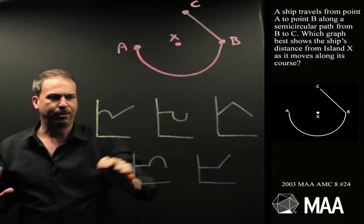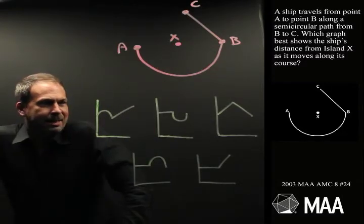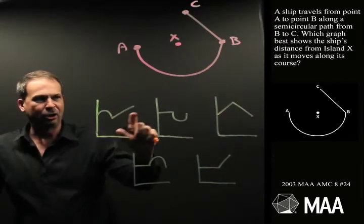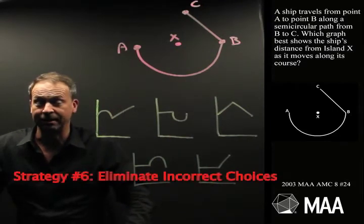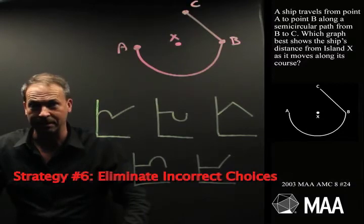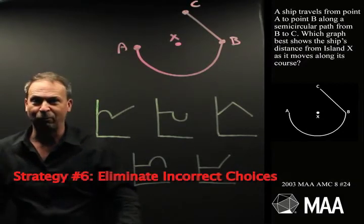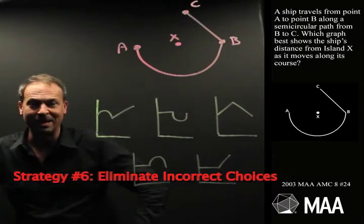Alright, which of these graphs is appropriate? Well, one nice thing about questions like these, when they give me a selection of answers, I can actually employ strategy number six, which is eliminate incorrect choices. Which of these graphs are obviously wrong? If I just get rid of them out of the way, I guess half my work will be done.